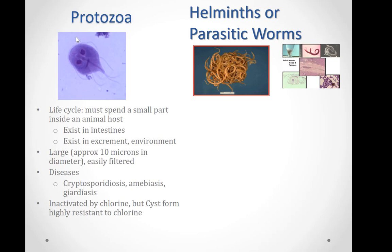Protozoa have a life cycle where they must spend a small part of their life cycle in an animal host. They complete their life cycle and exist in the intestines of this animal host, get released through excrement, and go into the environment. They are relatively large — approximately 10 micrometers in diameter — and as a result are easily filterable.